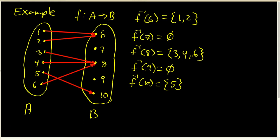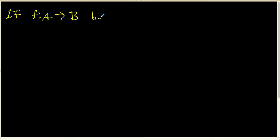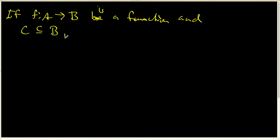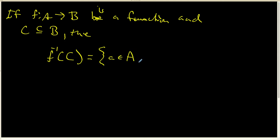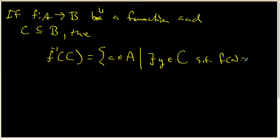There is an important variation on pre-image notation to address next. If we still have a function going from set A to set B, and we let C be any subset of the codomain B, then we define the pre-image of C in the same fashion as the pre-image of a single element. This is going to be all of the elements a in A such that there exists a y inside set C with f of a equal to that y.